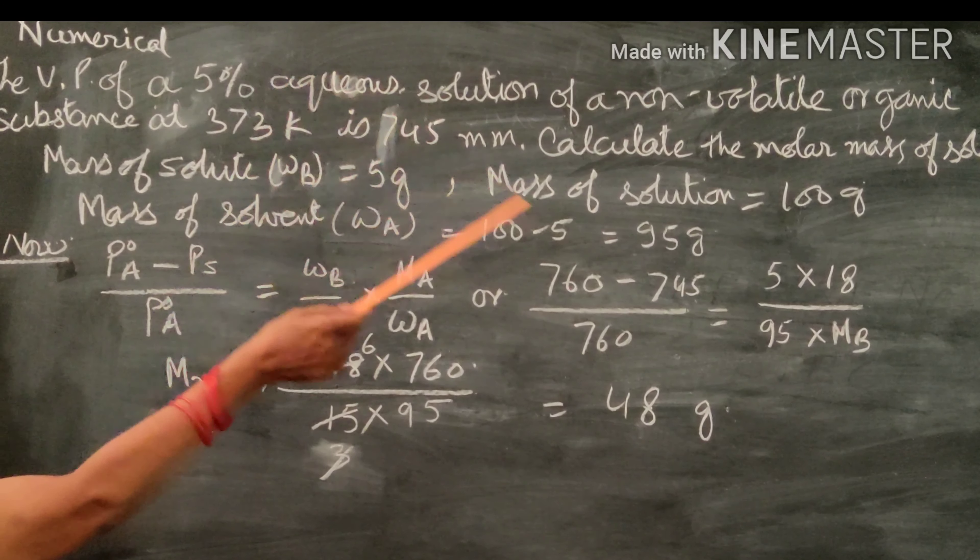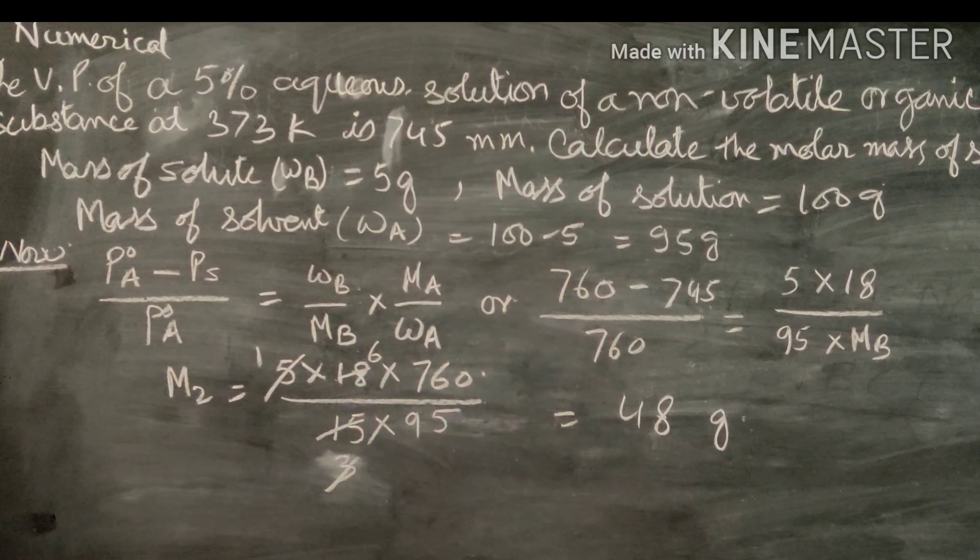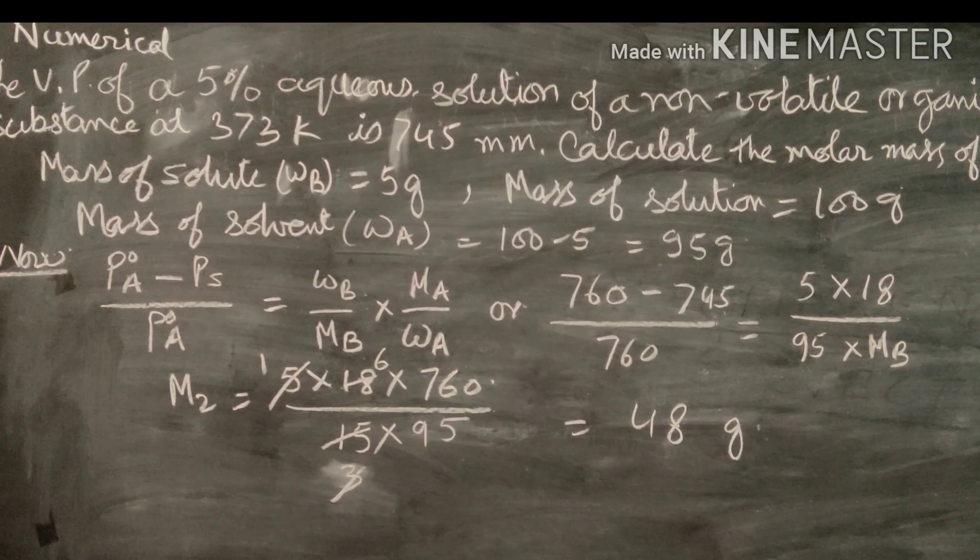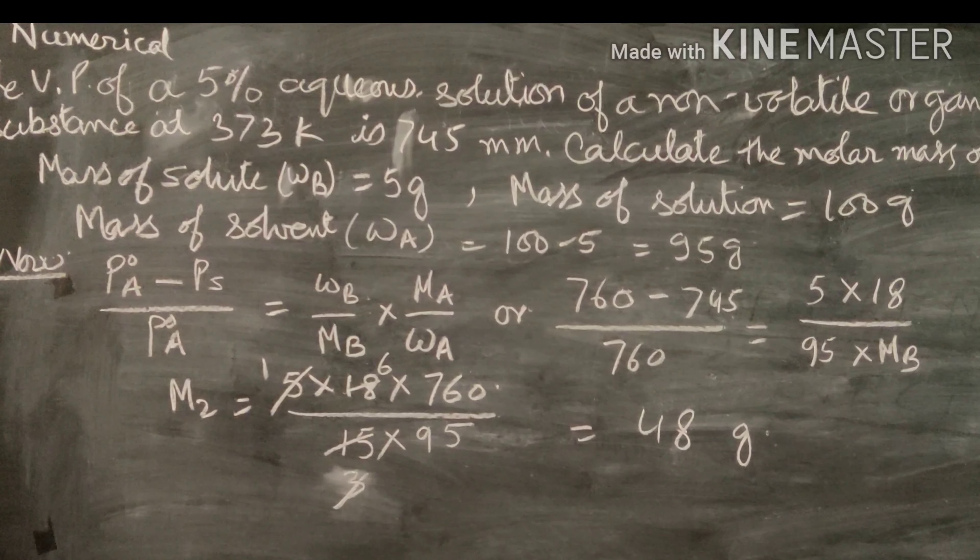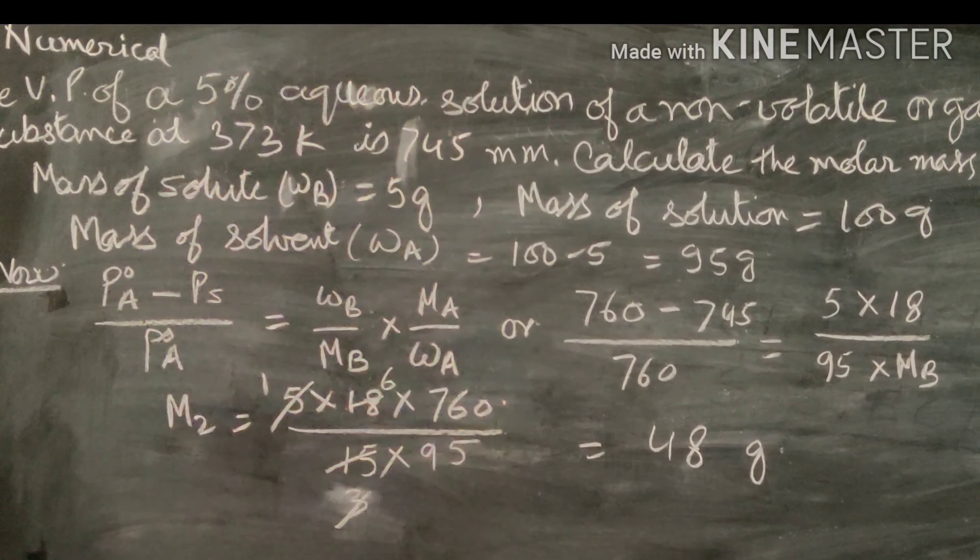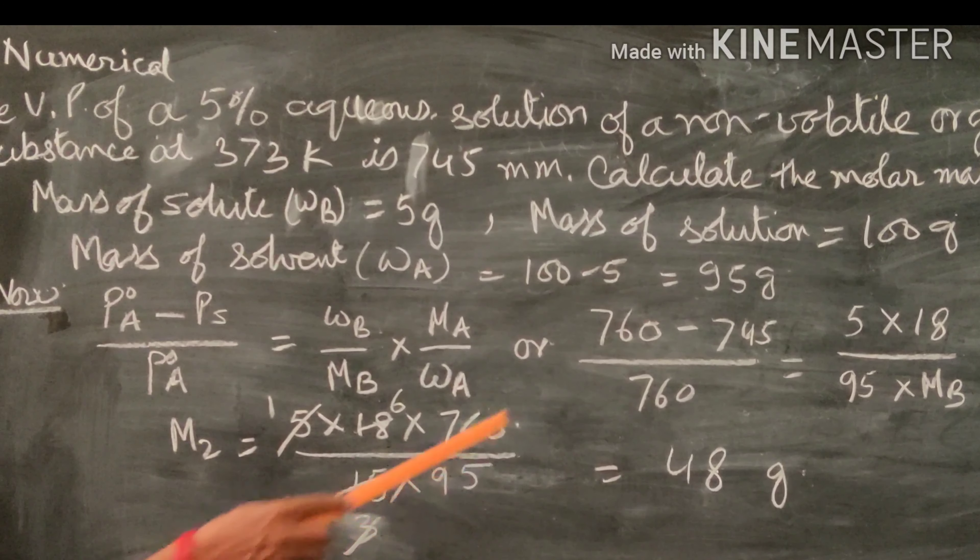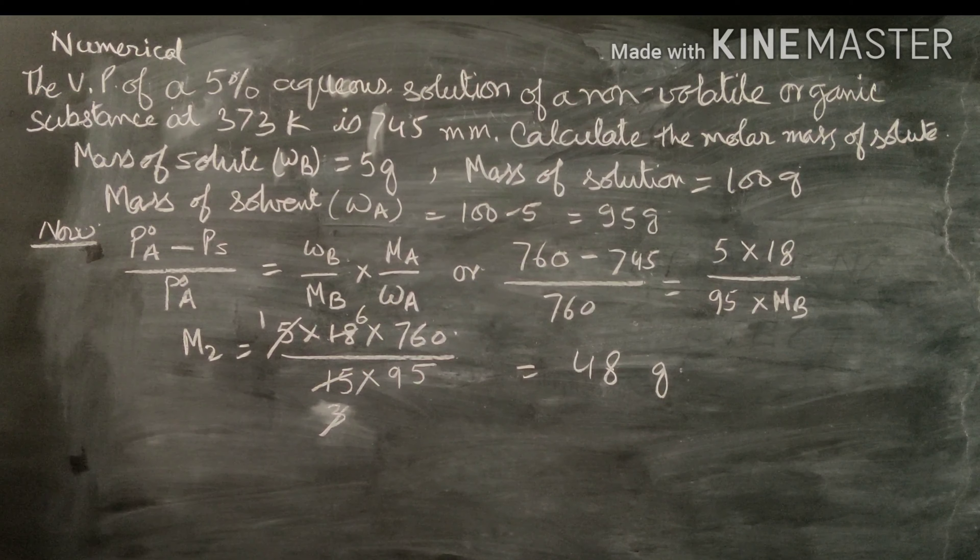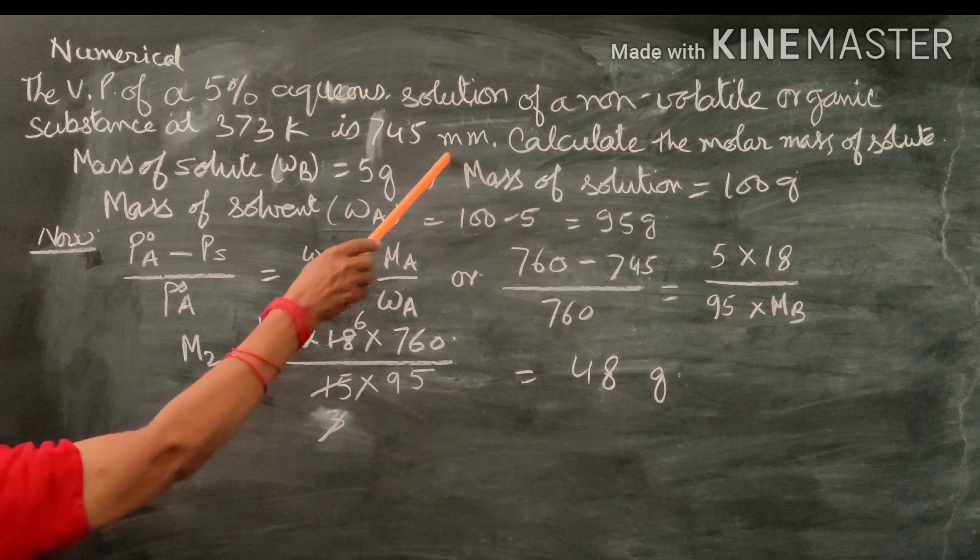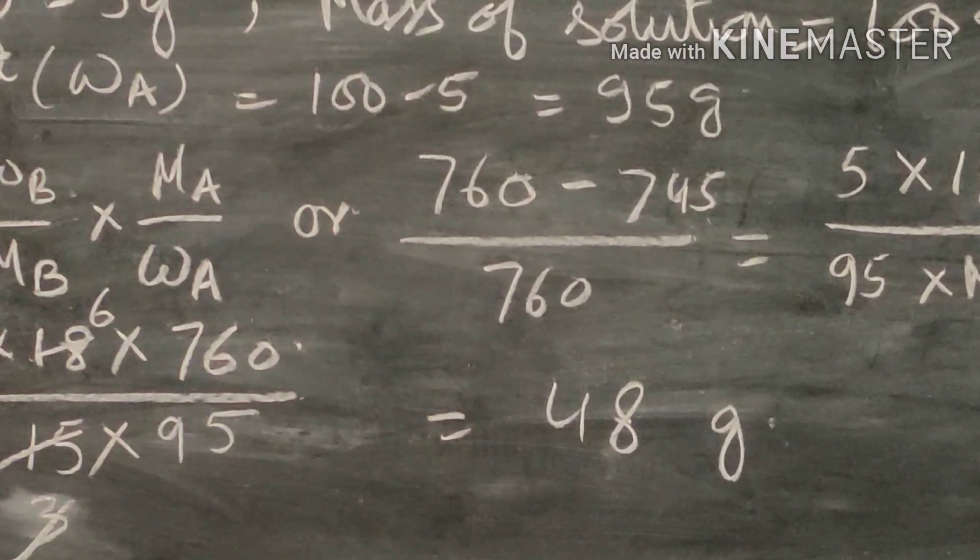According to the given values, 760 mmHg is the vapor pressure of water. At boiling point of 100 degrees Celsius, vapor pressure equals atmospheric pressure, which is 760 mmHg. That is why I am taking the vapor pressure of water as 760, since the temperature provided is 373 K.